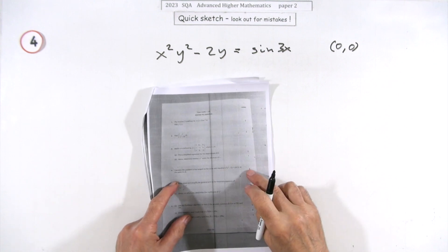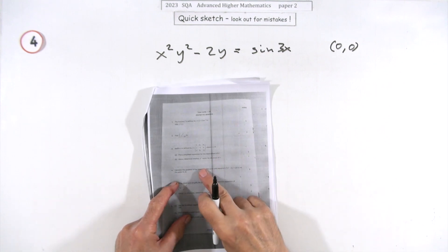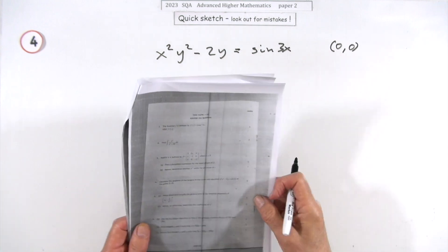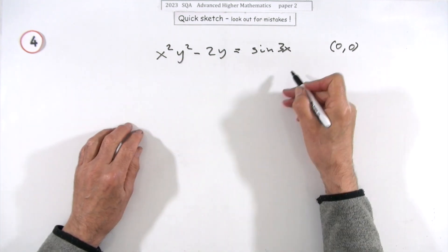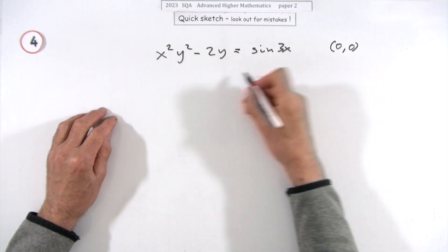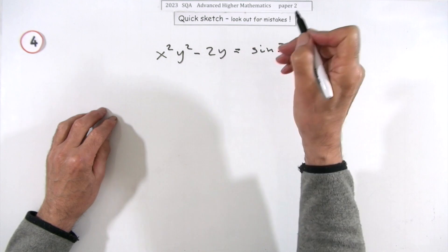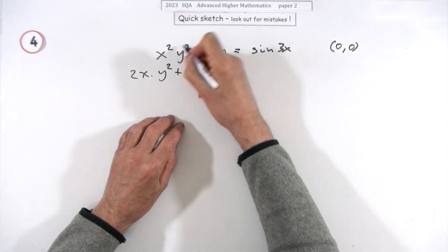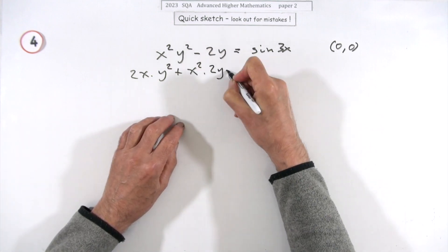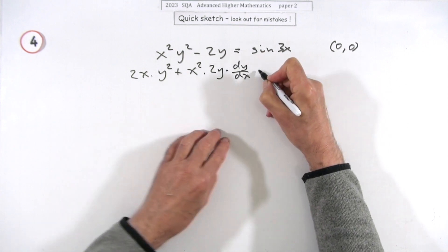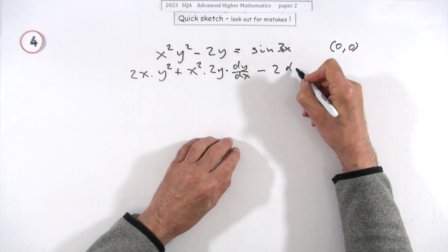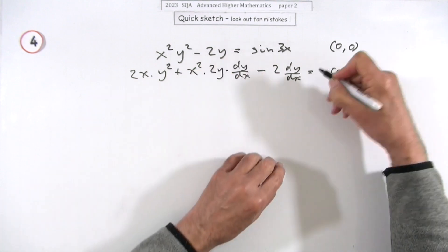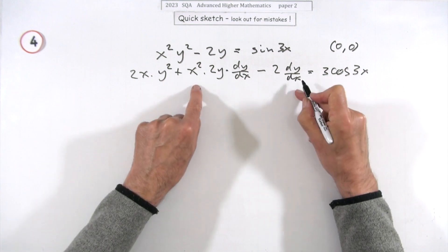Number four, four marks: calculate the gradient of the tangent — just the gradient, so the value of the derivative — for this equation at the point (0, 0). It's all mixed up so it requires implicit differentiation, remembering y is a function of x. Using the product rule: 2x times y² plus x² times 2y times dy/dx, minus 2 dy/dx, equals cos(3x) times 3.